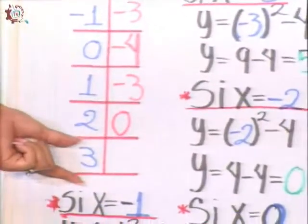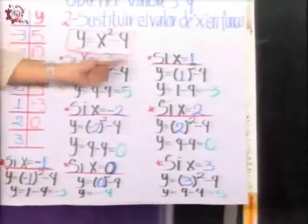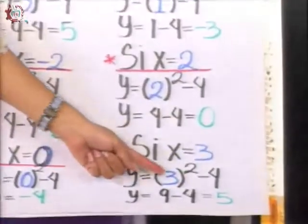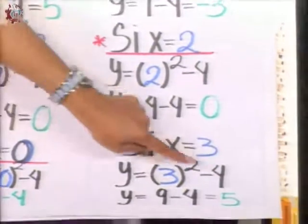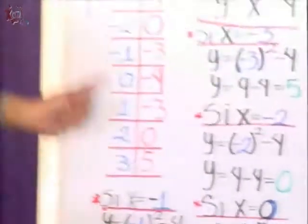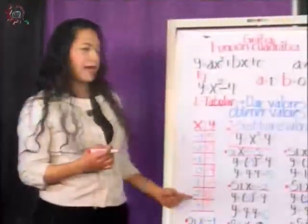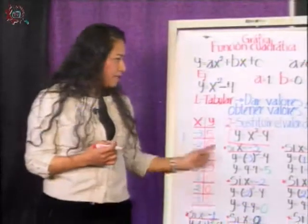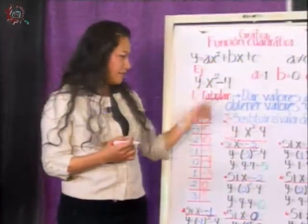We only need the value for 3. Again, I will substitute this 3 in my function, and I get y equal to 3 al cuadrado minus 4. 3 times 3 equals 9, minus that 4, I obtain a value of 5. This that we did is tabular. As a summary, we gave values to x to obtain the values of y, and that was by substituting in my function, this one that was given at the beginning.